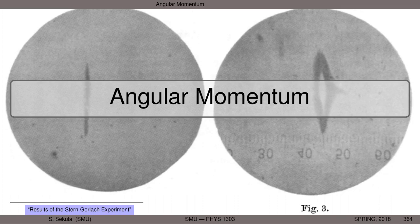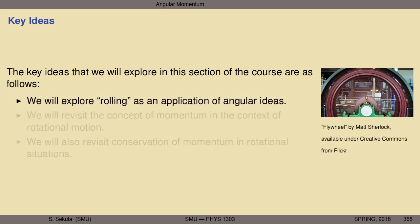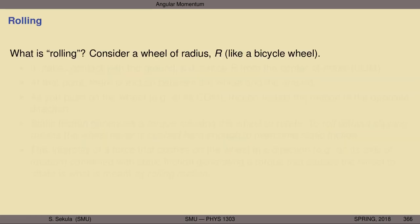We're going to take a look at the final concept to revisit in the context of rotational motion: angular momentum. But first, we'll examine motion that combines both linear and rotational motion. The key ideas include rolling as an application of angular ideas combining linear and rotational motion, revisiting momentum in a rotational context, and exploring conservation of angular momentum to draw conclusions about rules governing the universe.